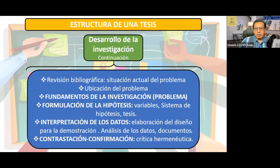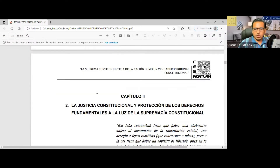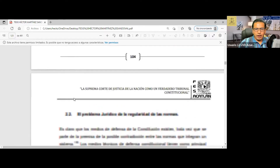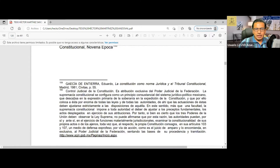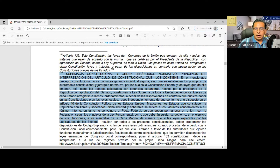Vemos la estructura de la tesis y el desarrollo de la investigación: revisión bibliográfica, ubicación del problema, fundamentos de la investigación, formulación de la hipótesis con sus variables, interpretación de los datos, contrastación y confirmación de los datos. Es muy importante tomar estas referencias porque son bases sustantivas para nuestro trabajo de investigación. A lo largo de la tesis desarrollamos todos estos supuestos. Vamos desarrollando nuestras referencias, notas de pie de página, citas y esquemas. Esta es una cita que agrega un texto complementario.